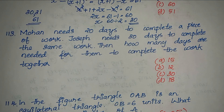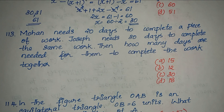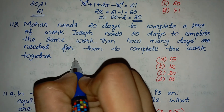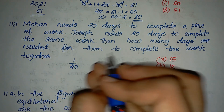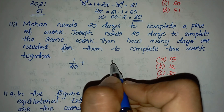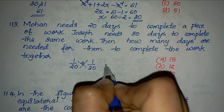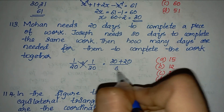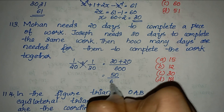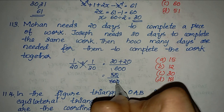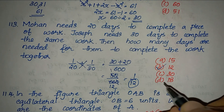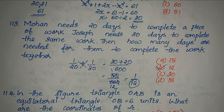Question 113: Mohan needs 20 days to complete a piece of work and Joseph needs 30 days. Working together, their combined rate is 1 by 20 plus 1 by 30. Cross multiplying: 30 plus 20 divided by 600 equals 50 divided by 600, which simplifies to 1 by 12. So together they complete the work in 12 days.